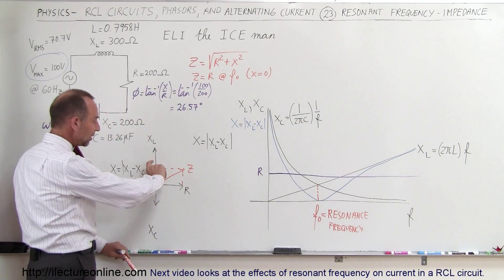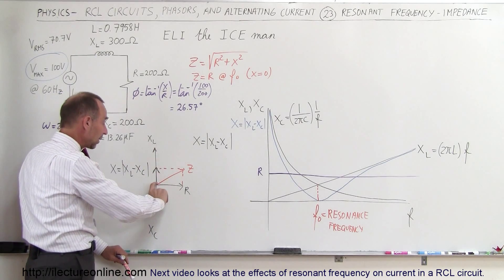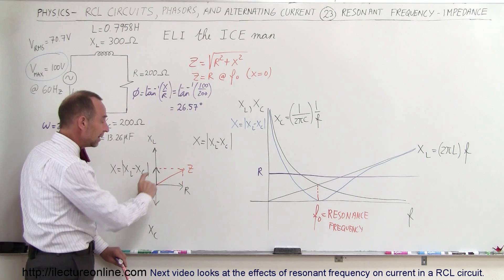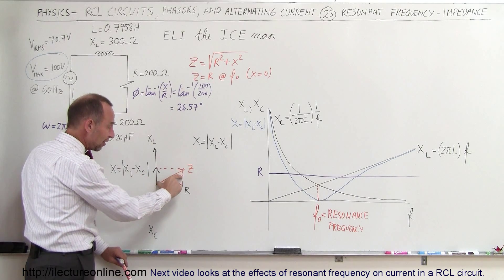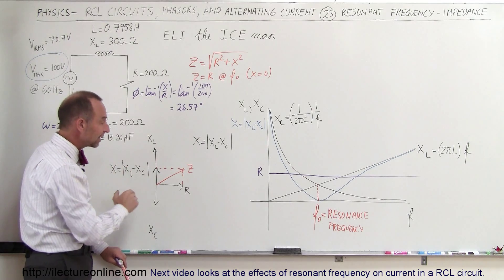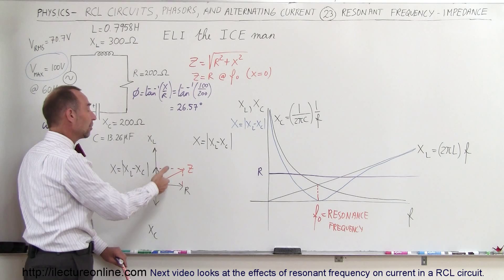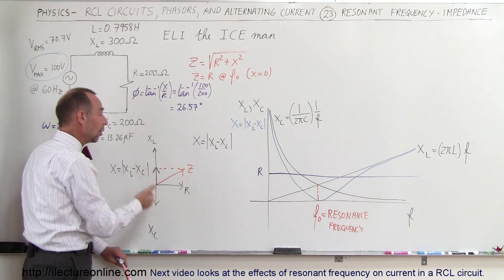Notice as the x becomes smaller and smaller and smaller, which means as x sub l becomes equal to x sub c, then you can see that z then eventually become equal to the resistance r. So the smallest value that the impedance can have is equal to r. Other than that it'll be larger than r depending upon which is bigger, x sub l or x sub c.